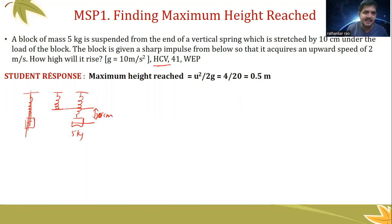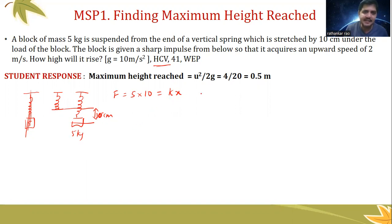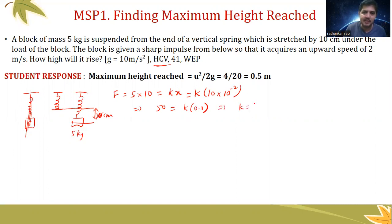From this sentence I can find the spring constant. The load applied is 5 kg multiplied by g (10), which gives force = 50 N. This should be equal to kx, where x = 10 cm = 0.1 m. So 50 = k × 0.1, which means k = 50 / 0.1 = 500 N/m.